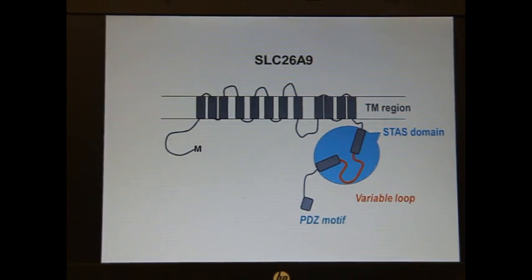This is a predicted topology model of SLC26A9 protein. It has 12 transmembrane regions with cytoplasmic N and C terminals.